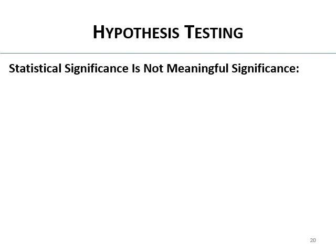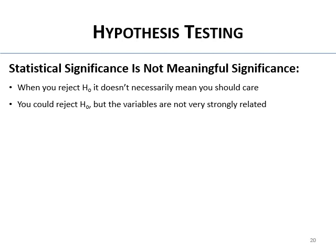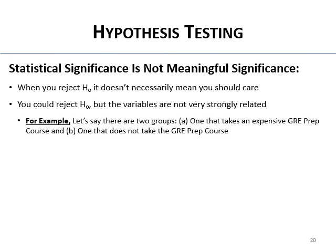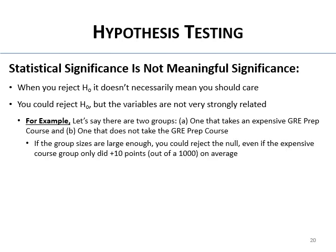Just because something is statistically significant doesn't mean you care or should care. Statistical significance means there's a relationship — the variables are related, the groups differ — but it could be the case that they differ by very little. Why do you care? If we reject the null it doesn't necessarily mean you should care. The variables might be related, but the relationship is tiny. For example: two groups — one takes an expensive GRE prep course, one doesn't — and the group sizes are large enough that you can reject the null even if the course group only does 10 points better out of 1,000.